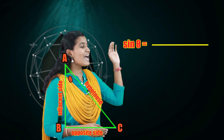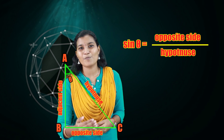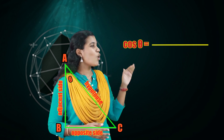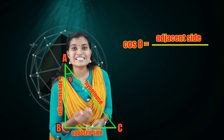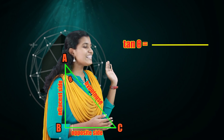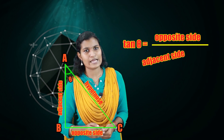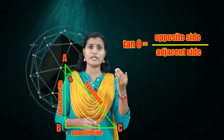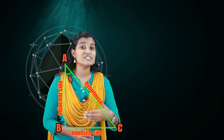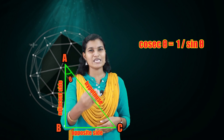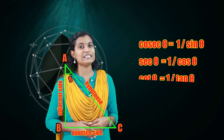Sin theta is equal to opposite side by hypotenuse. Cos theta is equal to adjacent side by hypotenuse. Tan theta is equal to opposite side by adjacent side — these are the three primary trigonometric ratios. We also have their reciprocal forms, giving us six trigonometric ratios in total.